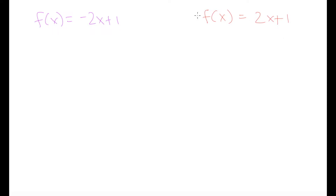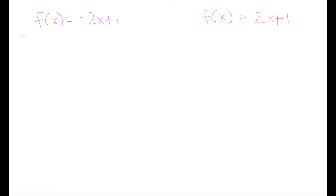These two functions are going to cross the y-axis at the same point but they have different slopes. Their slopes have the same absolute value, but one is a negative slope and one is a positive slope. Let's draw these functions onto a plane. The first thing we can do is determine some x and y values so we can actually plot our graph.